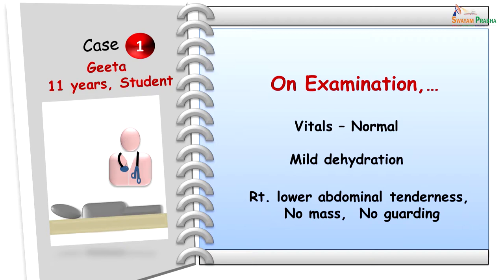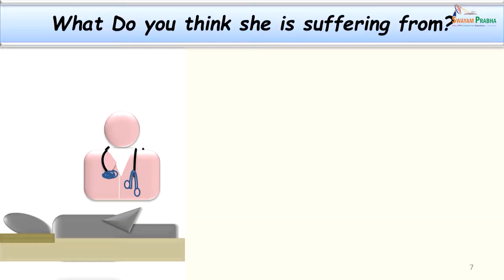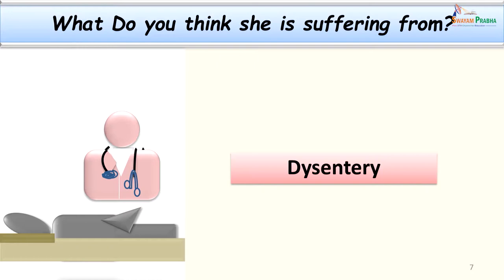On examination, the doctor found that vitals were normal. She had mild dehydration, and abdominal examination revealed tenderness especially on the right side, with no mass and no guarding. With the history of bloody diarrhea, we call this condition dysentery. One important thing here is that we need to differentiate whether the dysentery is bacterial or parasitic in origin.